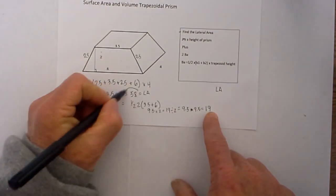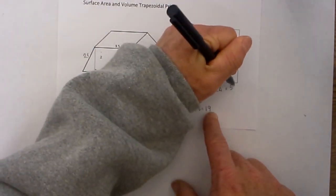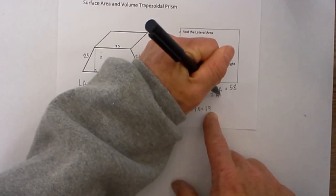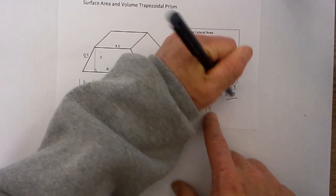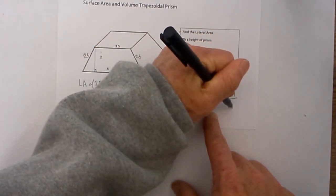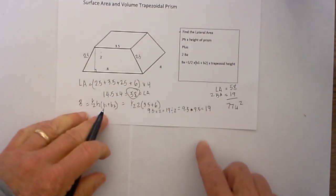We have a lateral area of 58 and 2 base areas of 19. Add those 2 together and that gives you 77 units squared.